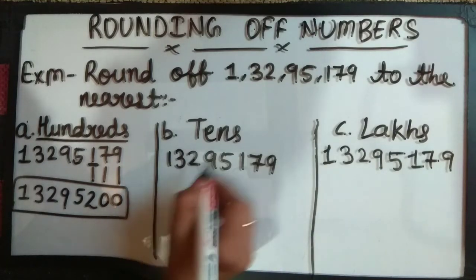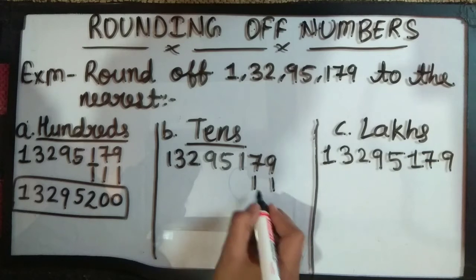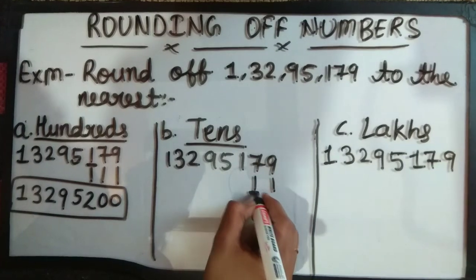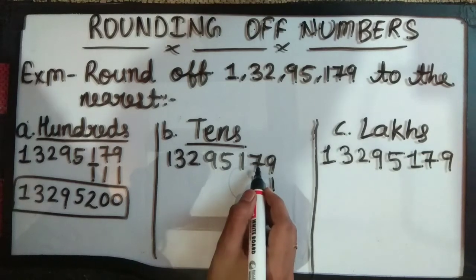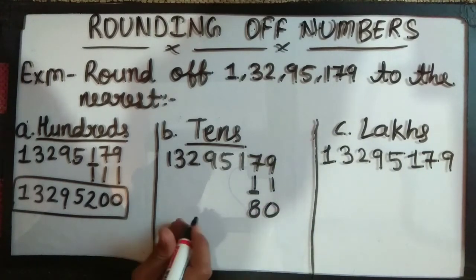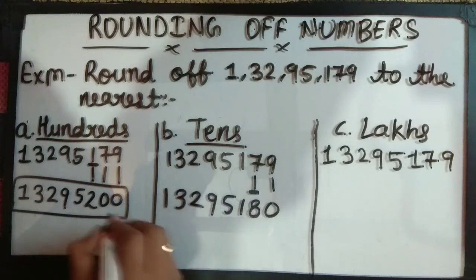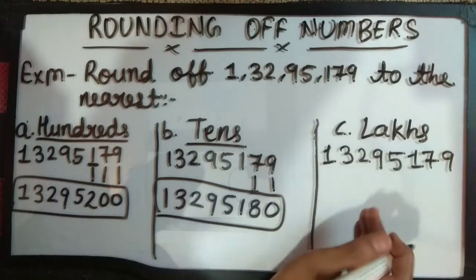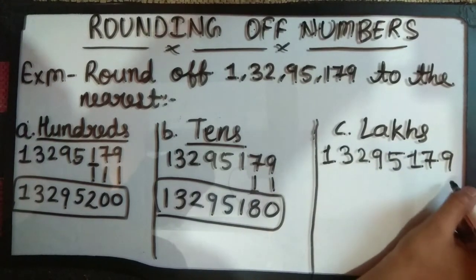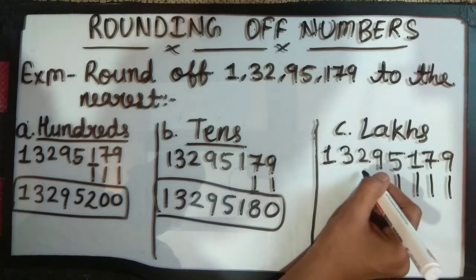Now for the second one, we need to round off to the nearest tens. The tens place value is here. The tens digit is 7. We will see seven plus one equals eight, and the right-hand side digits will become zero. So ones and tens: tens place value is 7, becomes 8. Then hundreds, thousands, ten-thousands, and one lakh place values remain as they are.